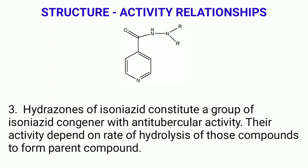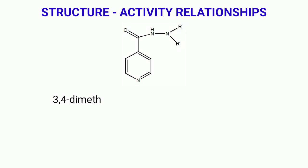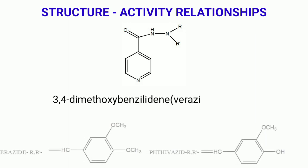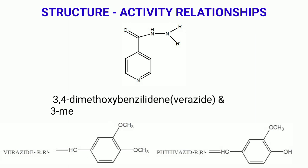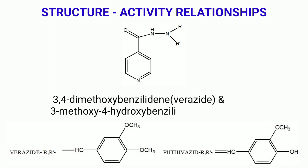Their activity depends on the rate of hydrolysis of those compounds to form the parent compound. Examples of this type include 3,4-dimethoxybenzylidine, also known as verazide, and 3-methoxy-4-hydroxybenzylidine, also known as thivazid.